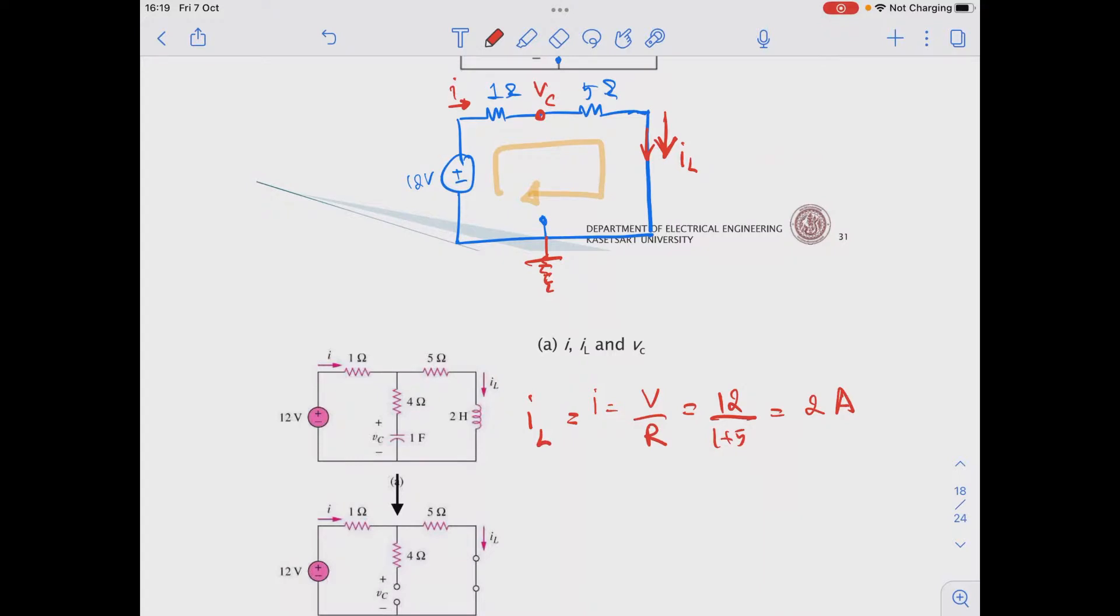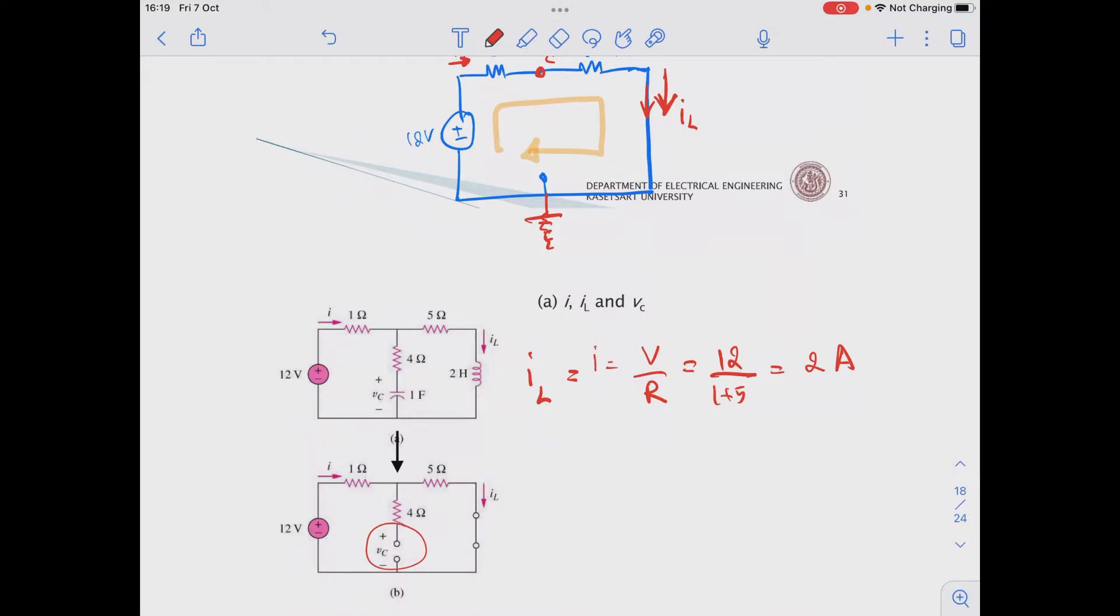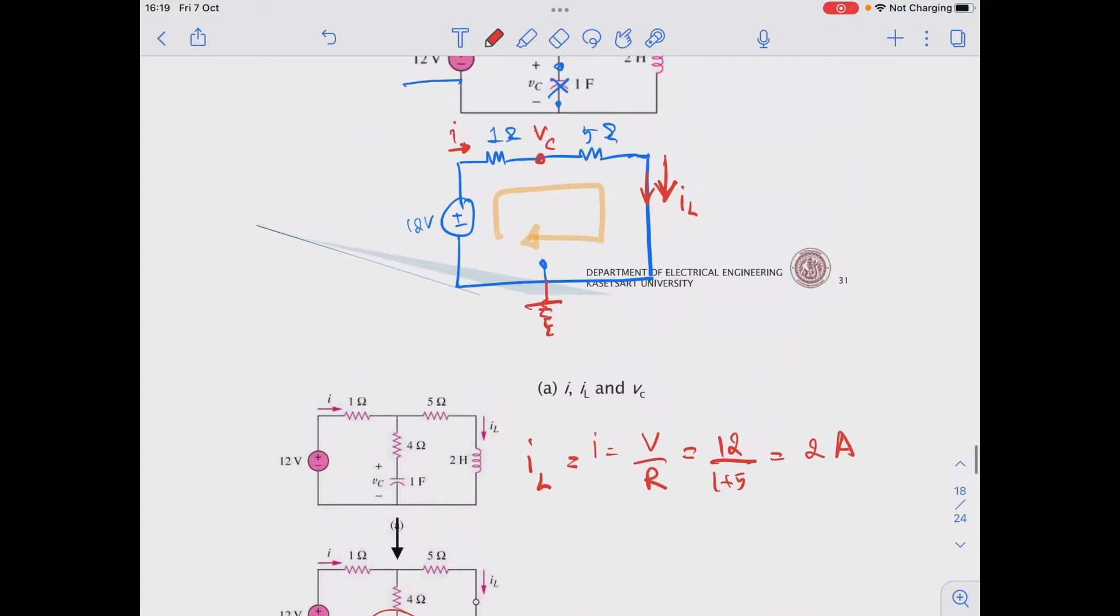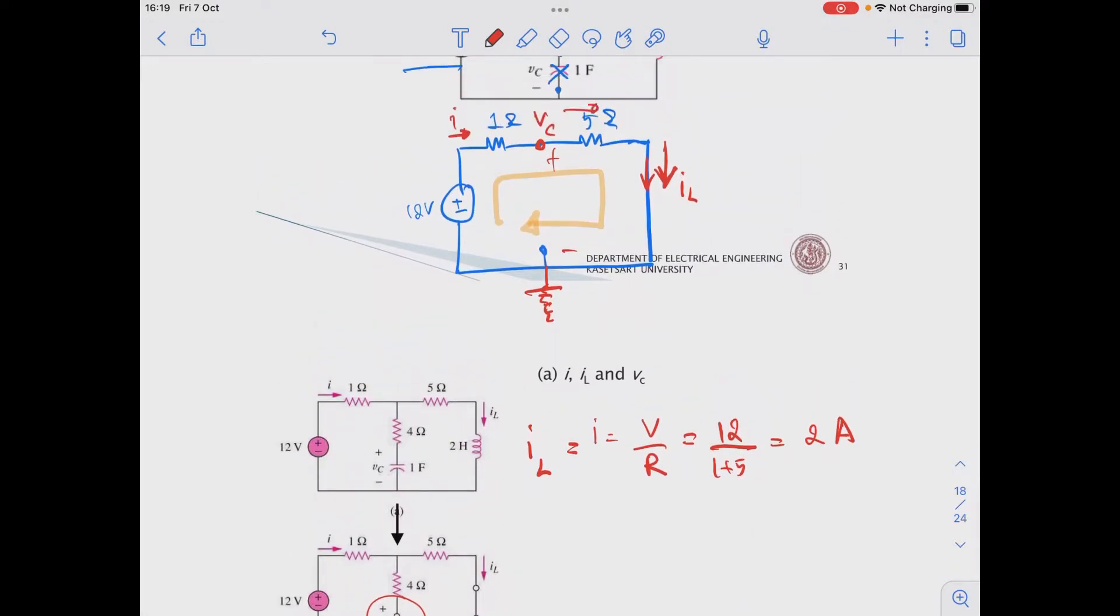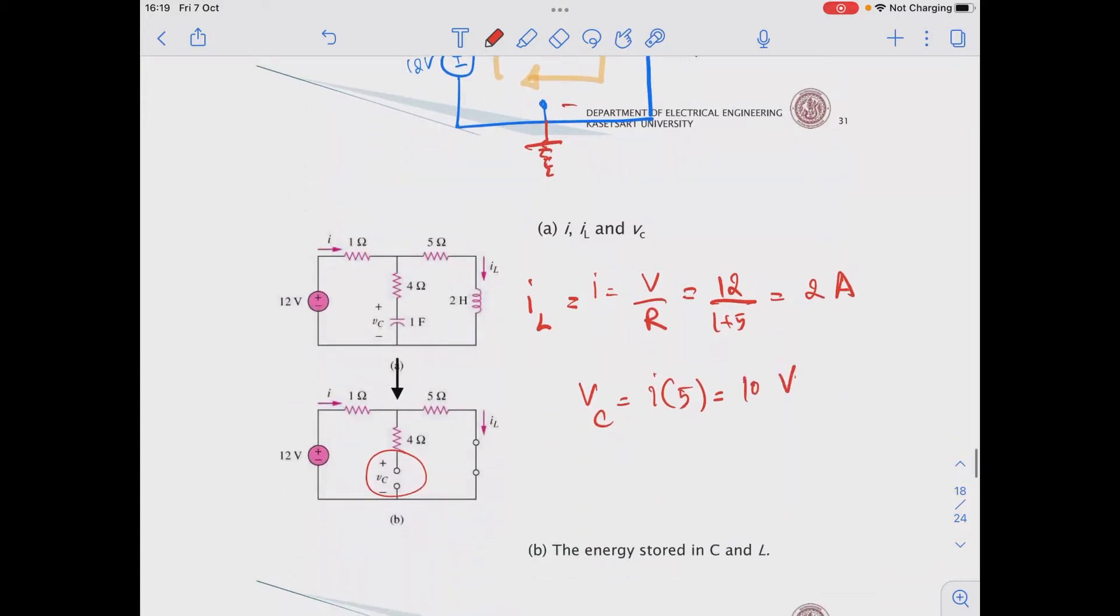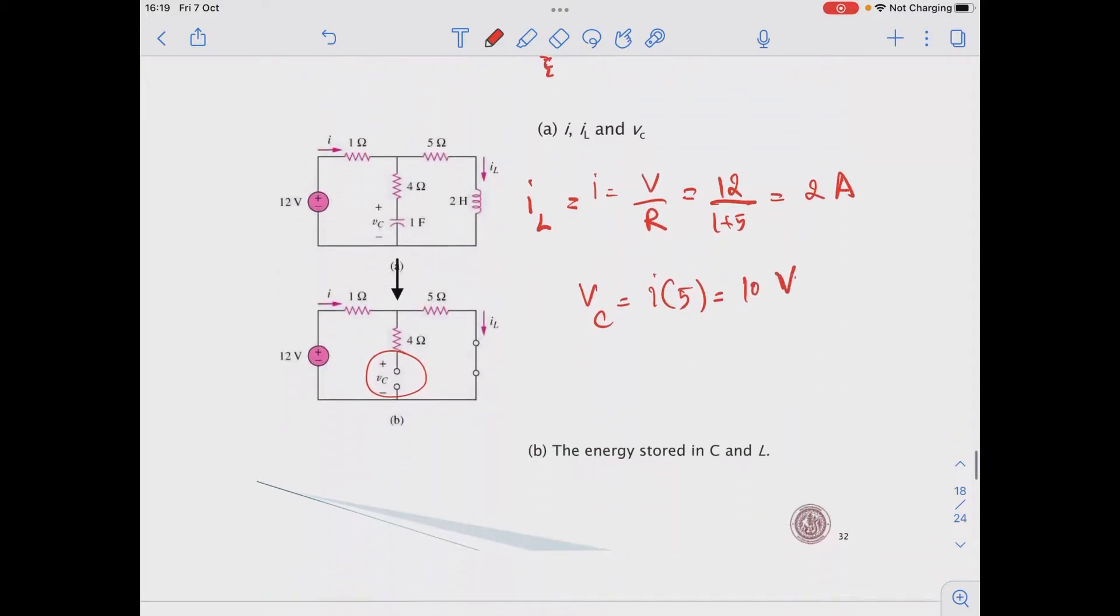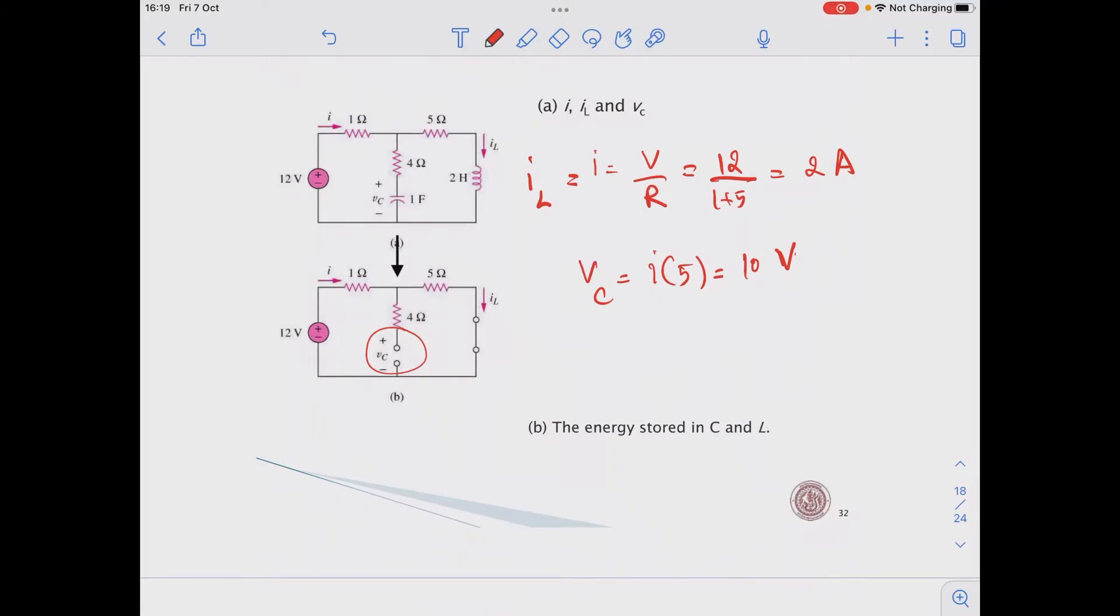Next, we need to find the voltage across C, which is the voltage across this 5 ohm. So we have I passing through this 5 ohm. So VC equals I multiplied by 5. So we have 10 volts here for the voltage across C. And then we can solve question number B.